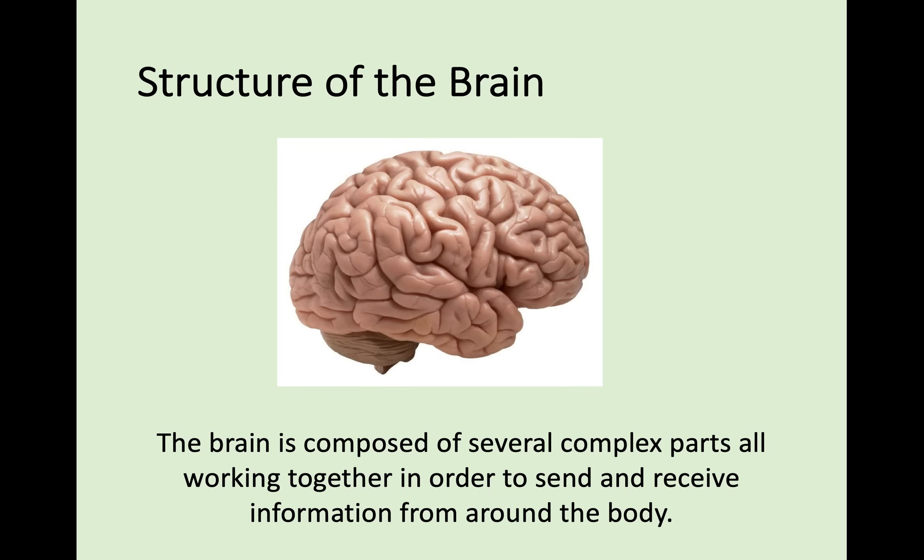So to start off with we're going to be looking at the brain. The brain is made up of several complex parts that all work together in order to send and receive information around the body, and we're going to look at three major parts for the National 5 content.